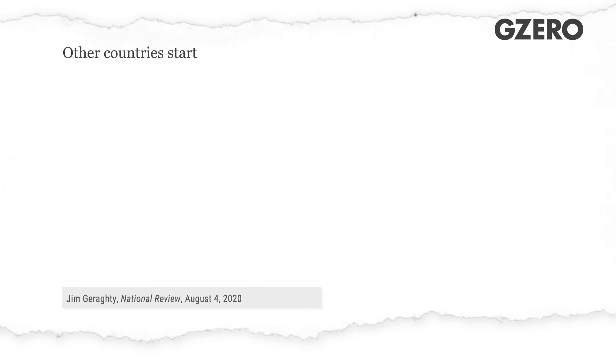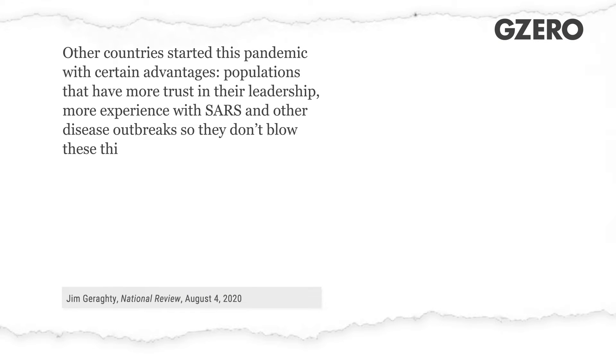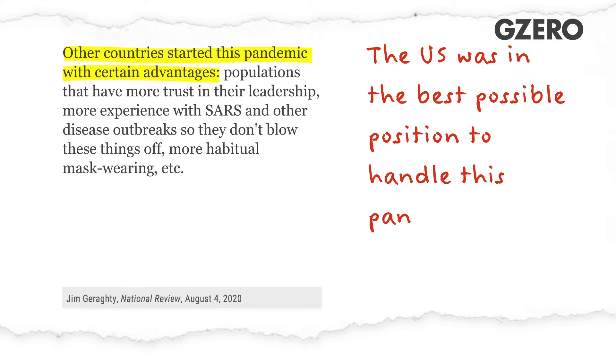Next, Geraghty writes that other countries held advantages over the US that left them better prepared to fight the pandemic, including more experience with SARS and other disease outbreaks. And I need to push back against this. The reality is that the United States was in the best possible position to handle this pandemic. We had the best scientists, the best labs, and many billions of dollars a year since SARS — more than any other country — invested in pandemic preparedness. Other countries, particularly in Southeast Asia, did have a lot of experience with past disease outbreaks, but they had nowhere near the resources of Washington, D.C. A lack of resources and planning is really not one of the reasons the US handled coronavirus terribly.